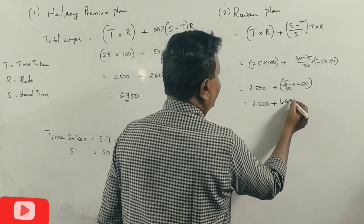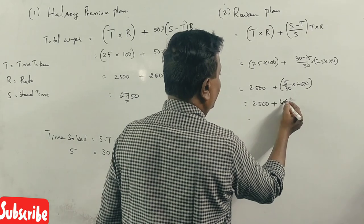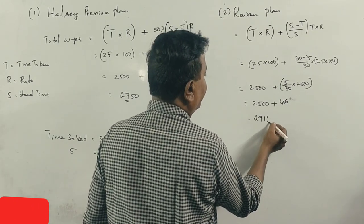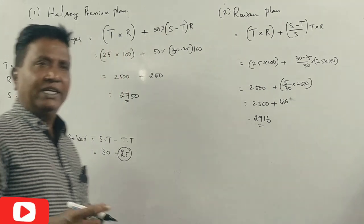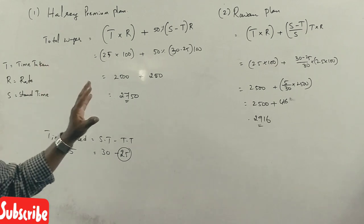That gives us 416, so the total is 2916 rupees. So these are the earnings under both the Halsey and Rowan systems.